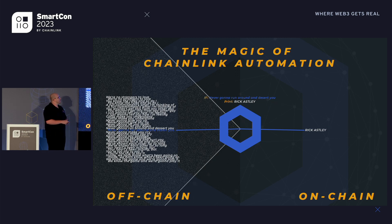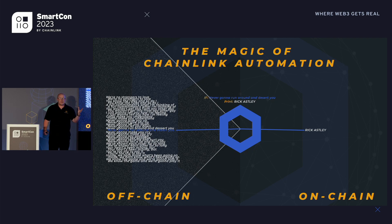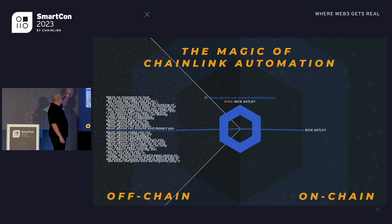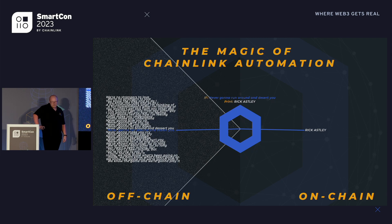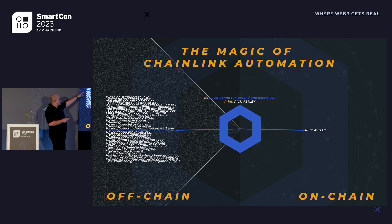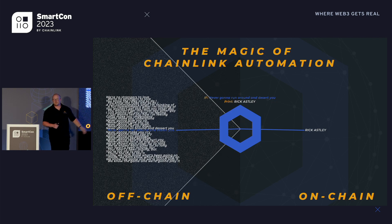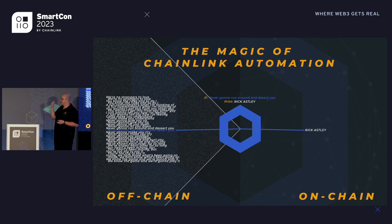This can look a little confusing, but here's a general rundown of Chainlink Automation. On the left are all our off-chain variables — for this presentation I've used lyrics from Rick Astley's 'Never Gonna Give You Up'. With Chainlink Automation, we have a bunch of parameters, and once a certain parameter is hit, we can trigger that on-chain transaction. We scoop up anything from off-chain monitoring and push it on-chain, which then triggers that process to happen on the network.